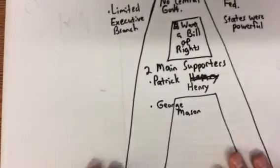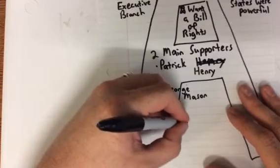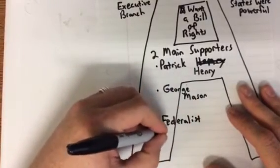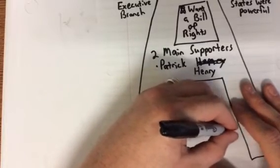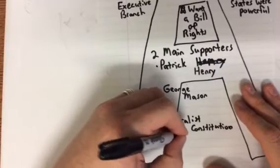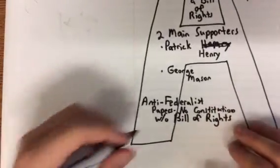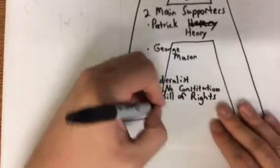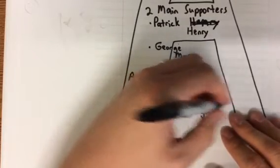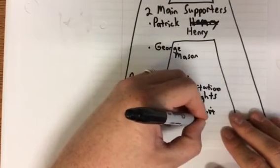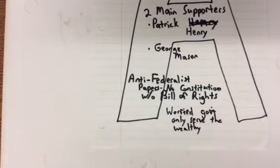They wanted a Bill of Rights as a big priority, and they wrote the Anti-Federalist Papers. They were also worried that the government would only serve the wealthy, and they wanted to make sure that the government could take care of everybody.